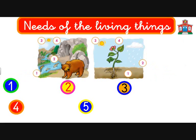What does it mean, needs? Living things like this bear, this animal, and this little flower plant need something to live. Five things. For example, the fish for the bear, and the nutrients for the plant — these are food. So a living thing like a bear or a plant needs food to live, to survive, otherwise they die.